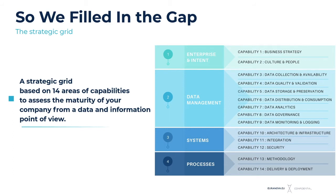What we did was the work of scientists — we did not invent a new model out of the blue. We considered 22 models from the state of the art and compiled all of them, taking the best of breed from each to rebuild a new model. We ended up with a data management maturity model containing 14 areas of capabilities segmented into four categories: enterprise and intent, data management, systems, and processes. What makes this different is that it's an actionable model — it not only gives you the current state but gives you a way to build the roadmap of the program to roll out.